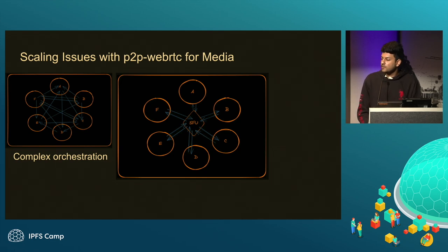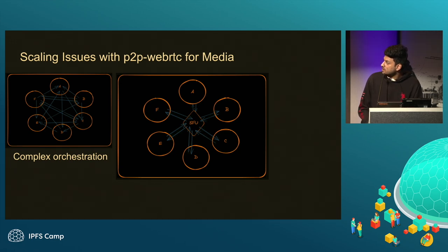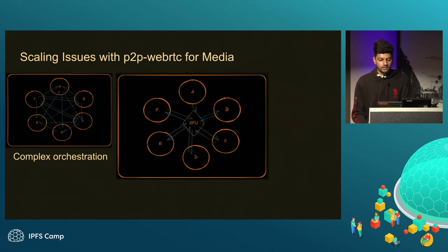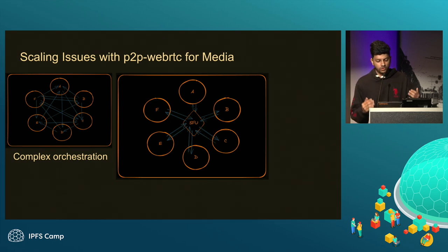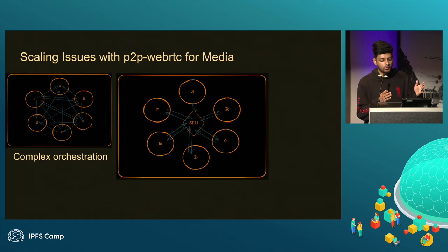Scaling issues with P2P WebRTC media. WebRTC was designed for peer-to-peer communications with a few people. But if there are five to six people on a call, every independent peer has to manage independent connections with everyone — just orchestrating this whole mesh is chaos. Compared to now, what we have is a centralized SFU: a central entity everyone connects to, which just routes media to different people. People only have to maintain one WebRTC transport and all media flows through that.